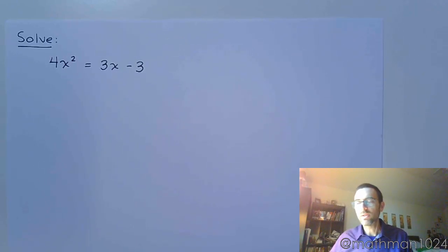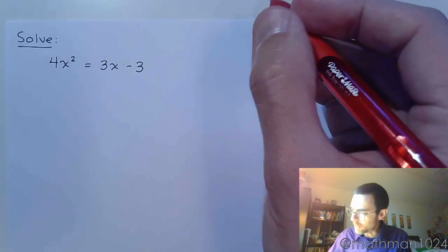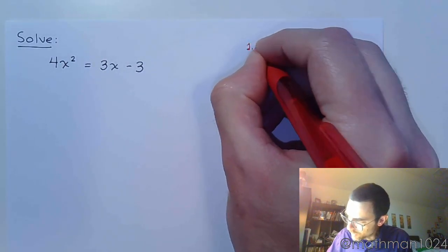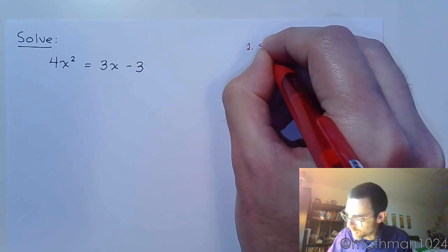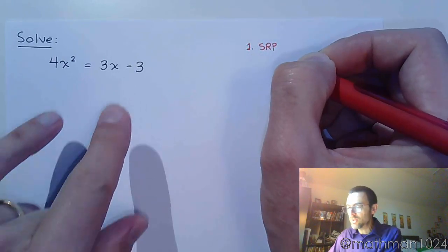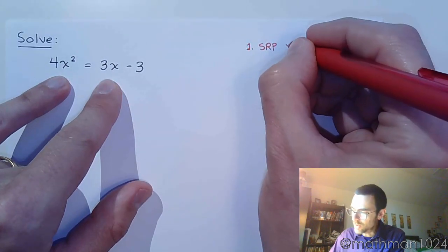All right, let's try our hand at solving these quadratic equations, starting off with 4x squared equals 3x minus 3. Now if we go through that progression we talked about, the first method we try to use is the square root property. And we notice here that you've got two instances of x, so this is a no-go.